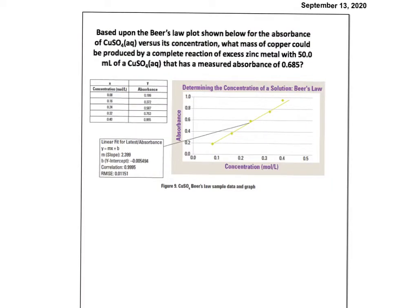So here's a Beer's Law plot for the absorbance of copper sulfate versus its concentration. And it wants to know what mass of copper could be produced by the complete reaction of excess zinc metal with 50 mL of CuSO4. So essentially we are reacting the zinc with an unknown amount of CuSO4 and it will produce these blue copper ions. That's our unknown.